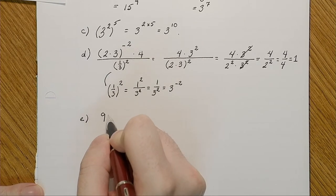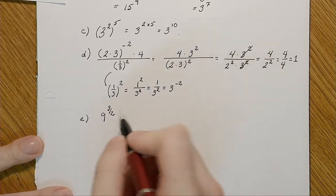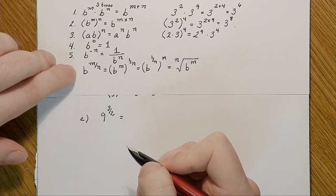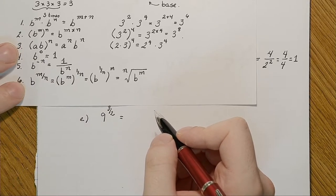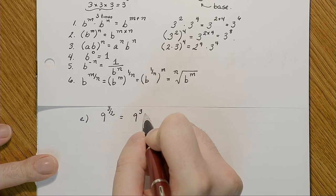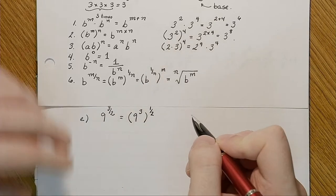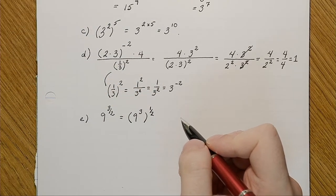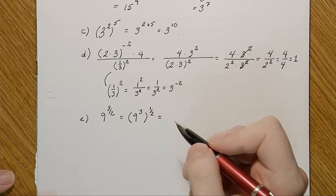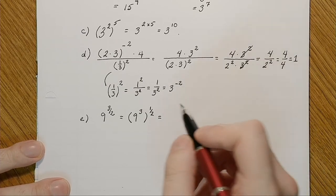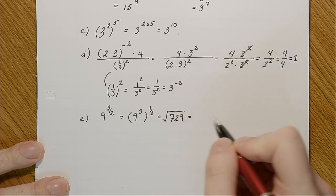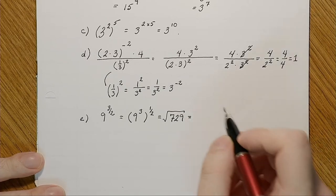Let's do 9 to the three-halves. Using our sixth rule, I'm going to do 9 cubed all to the one-half. 9 cubed is 729, and then the half gives me the square root. The square root of 729 is 27.